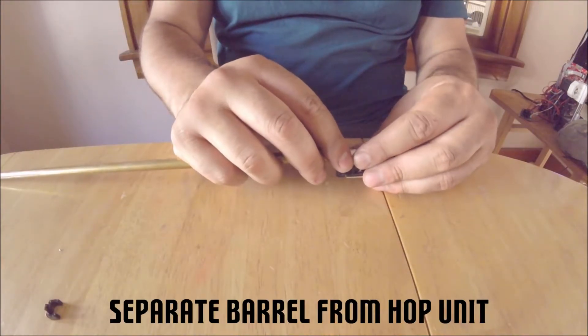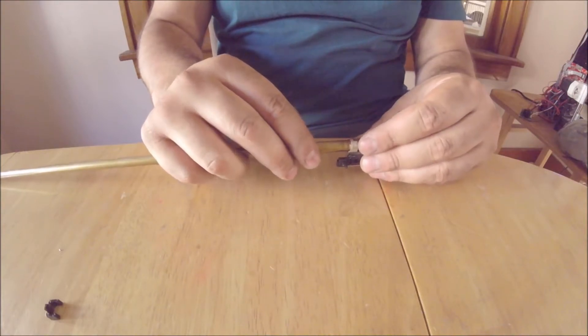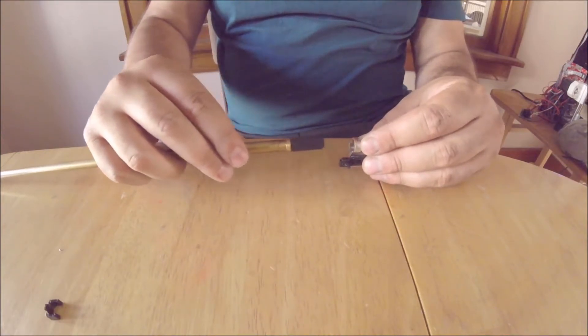Next, twist the barrel and pull it away from the hop unit. Make sure not to force this step. You can damage your bucking if you don't take your time.